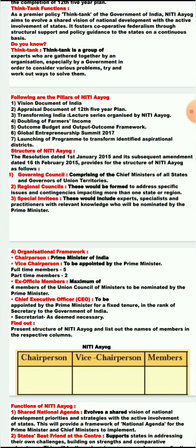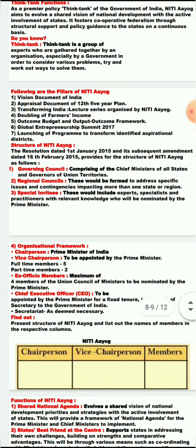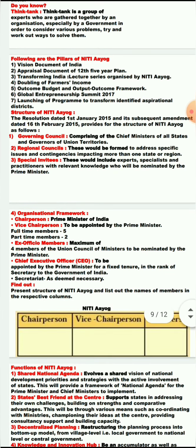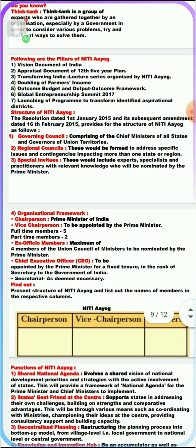Now the fourth element is the Organizational Framework. There is a table with three columns: Chairperson, Vice Chairperson, and Members. Under Niti Ayog, there is a Chairperson, Vice Chairperson, and Members. The Chairperson of Niti Ayog is the Prime Minister of India.